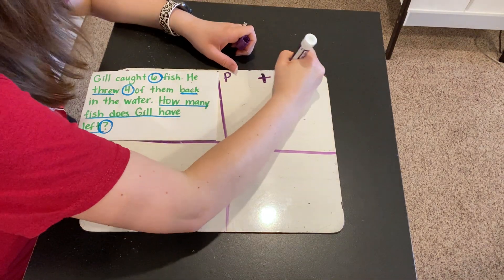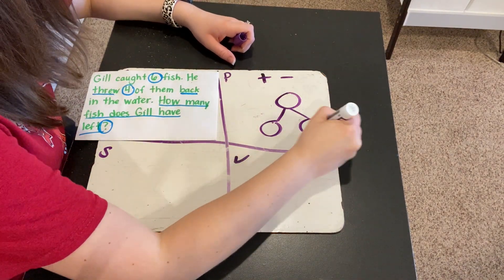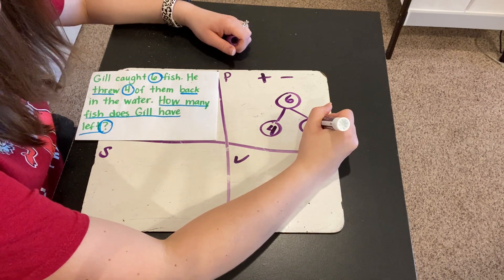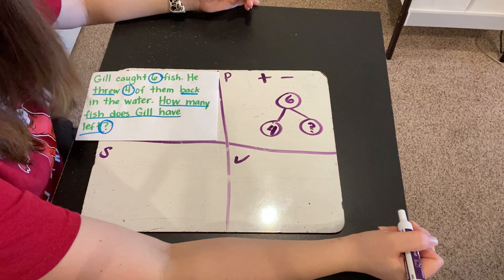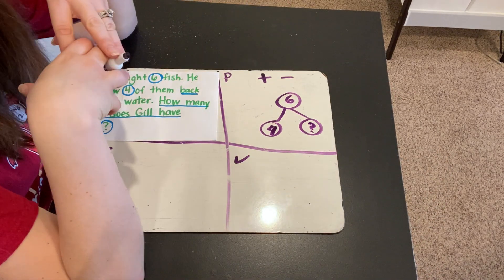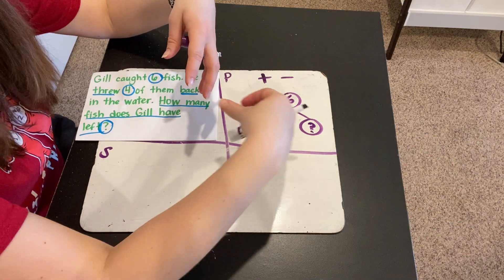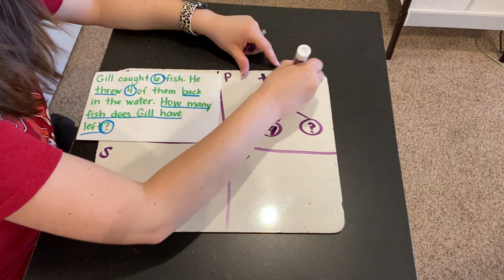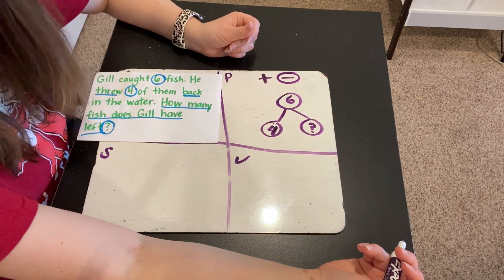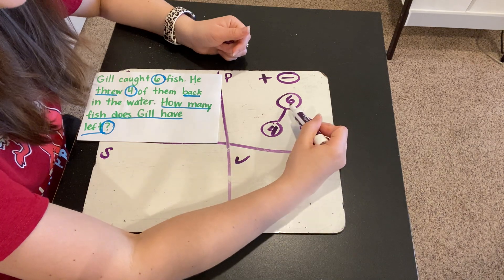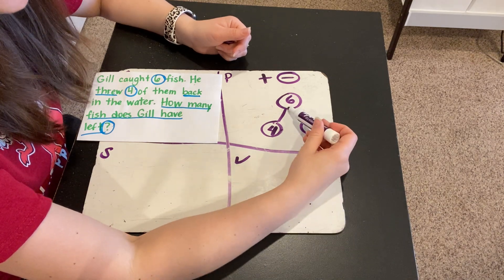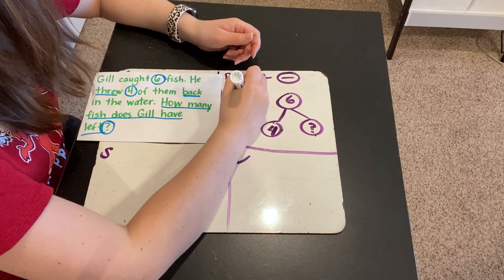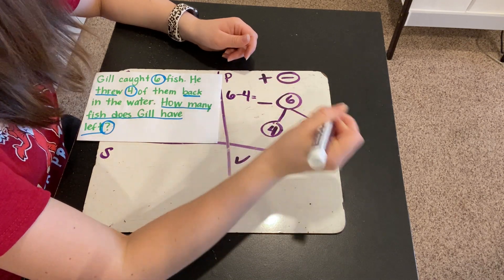So we know Gil had six fish total. He threw four of them back. We want to know how many out of those six, after he threw four back, does he have left. So are we adding or subtracting? Gil has six fish. He throws four back. How many does he have left? We're going to have to subtract to figure that out. When we're getting rid of fish or throwing them back, that's subtracting or separating. We also have the whole and one part. Anytime we have the whole and one part and we're solving for the other part, you have to subtract to do that. So our number sentence will be six minus four, and we're going to solve and figure out what that equals.